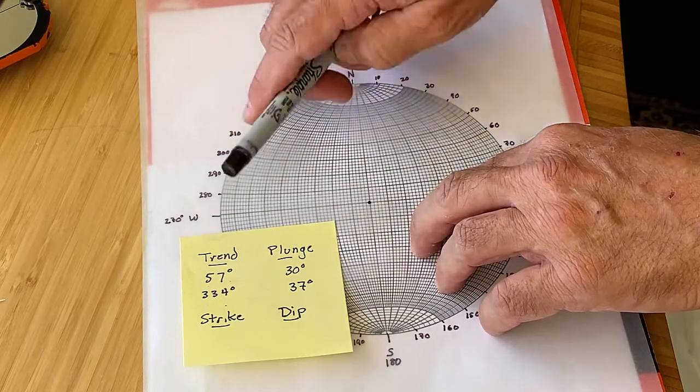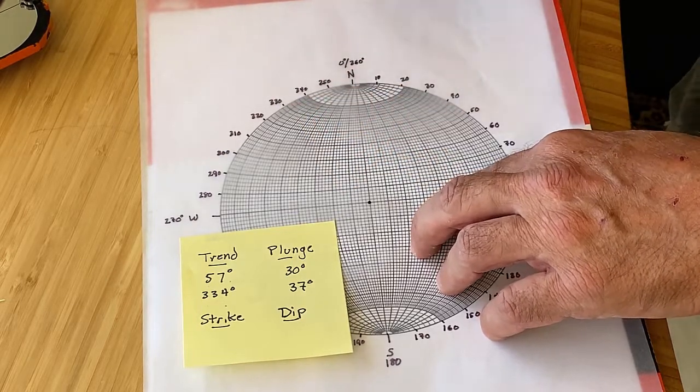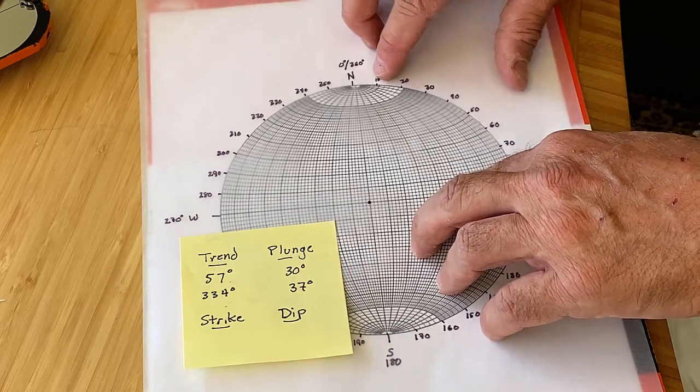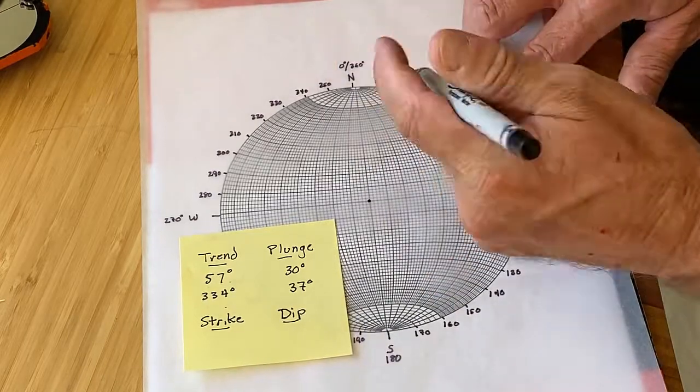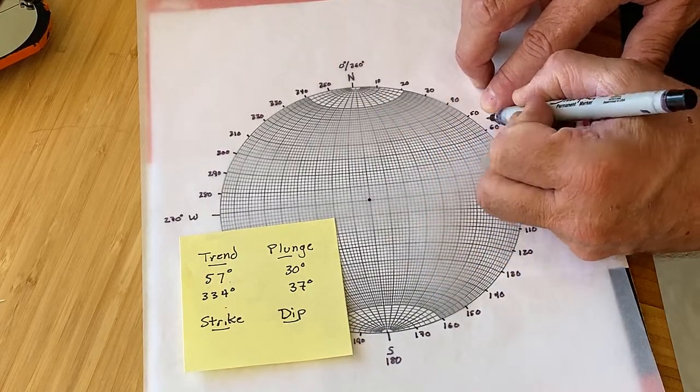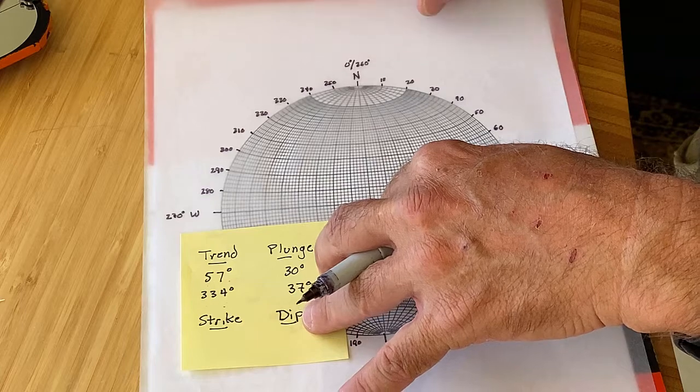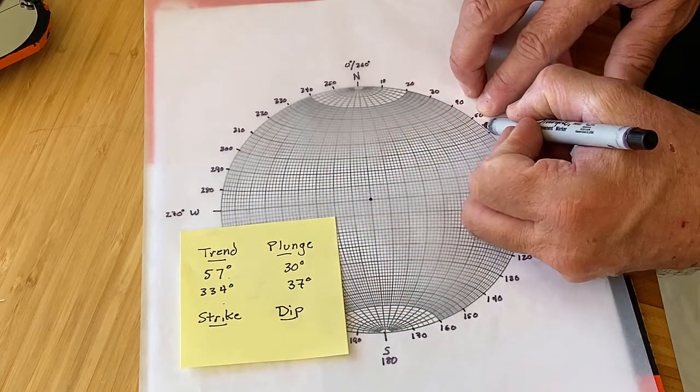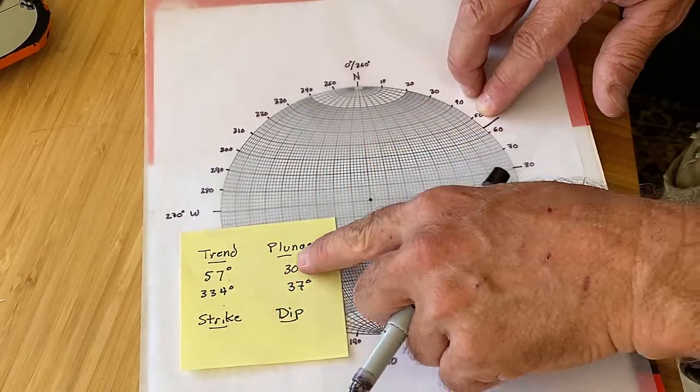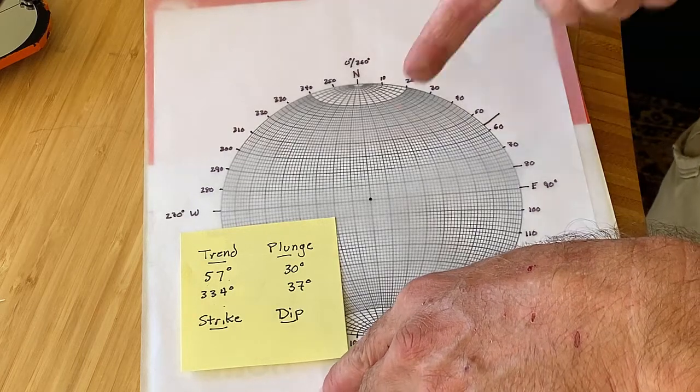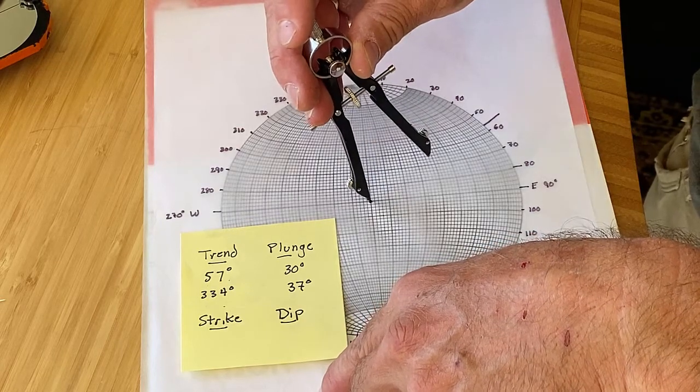The trend is—we're thinking about lines that are dipping into what you can imagine as being a bowl here. And so the 57 degree trend is 10, 20, 30, 40, 50, and then 57 degrees. These are in twos, so 2, 4, 6, 7 right here. Okay, so that's a 57 degree mark, and we have to now figure out where that line plots out here on the stereo net.